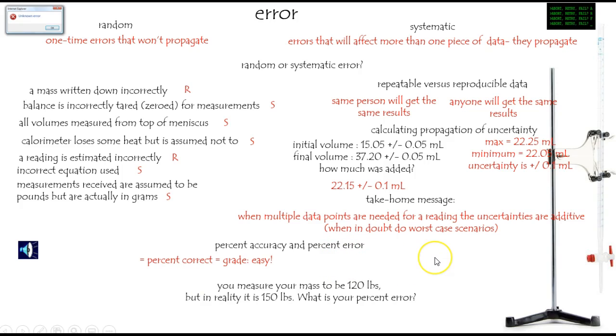Well, you know, there are formulas. Error over accepted value times 100. But why don't you just do the difference, right? If it's 80% accurate, it's 20% error. And that's the case here.